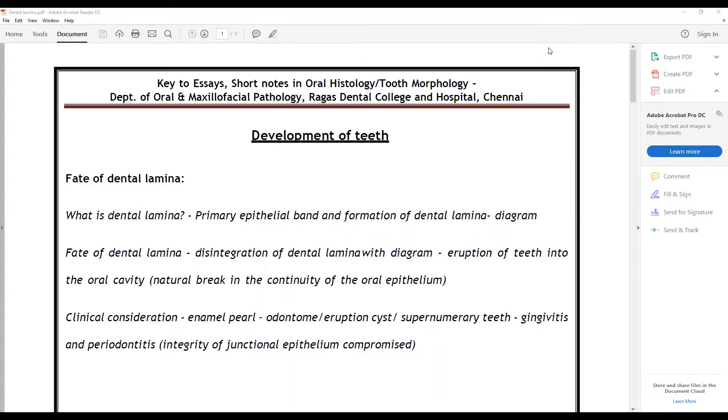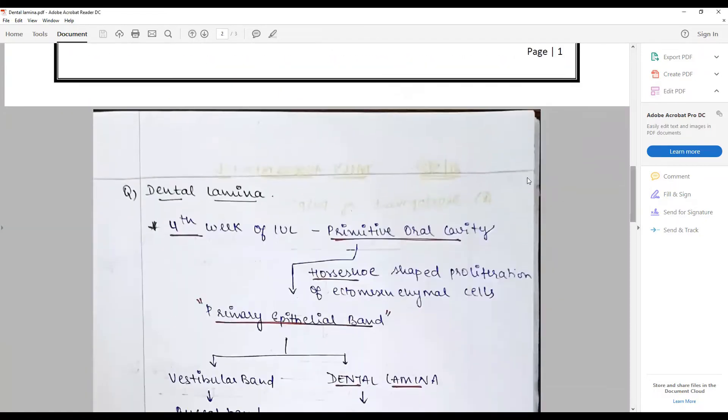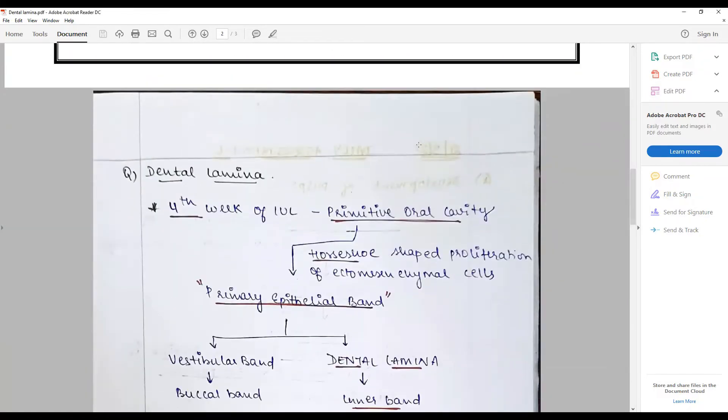You'll discuss clinical considerations: the enamel pearl, odontome, eruption cyst, supernumerary teeth, gingivitis and periodontitis where the integrity of junctional epithelium is compromised. Altogether you have to discuss this going into the answer sheet about dental lamina.